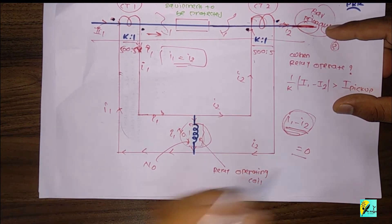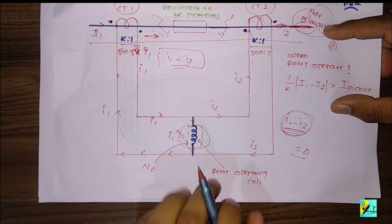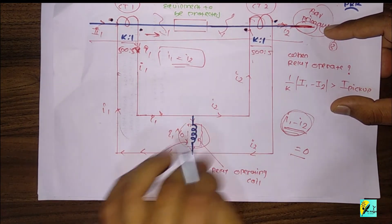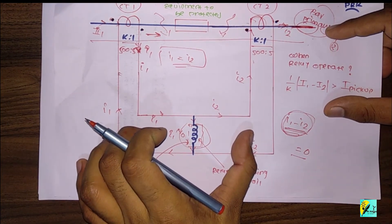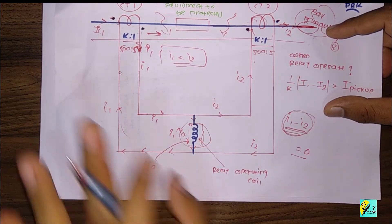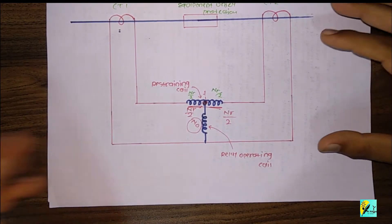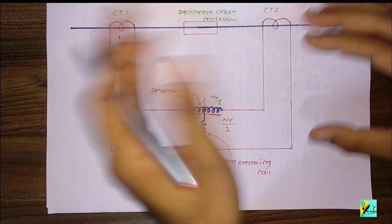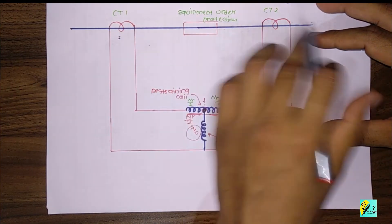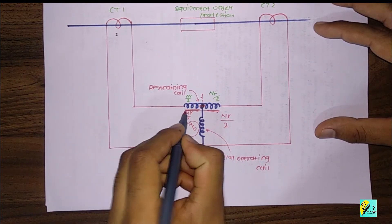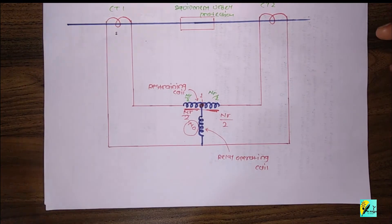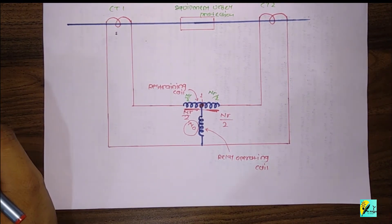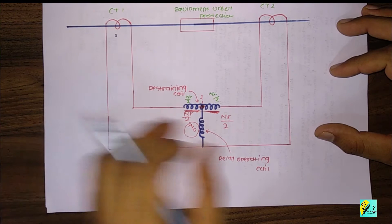If I1 minus I2 equals zero, then this relay operating coil will not operate — this is the normal case with no fault. We have added the restraining coil, which will produce a force or torque opposing the operating coil of the relay. So in a wrong condition, the relay will not operate even without a fault.